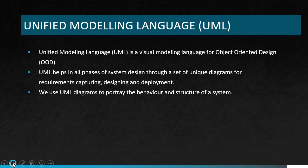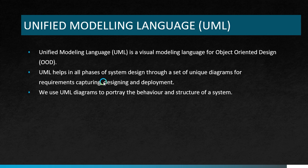Unified Modeling Language is a visual modeling language for object-oriented design. UML helps in all phases of system design through a set of diagrams for requirements capturing, designing, and deployment. We use UML diagrams to portray the behavior and structure of a system. It is mainly used in object-oriented design and programming, helping in all stages from identification of requirements to implementation.